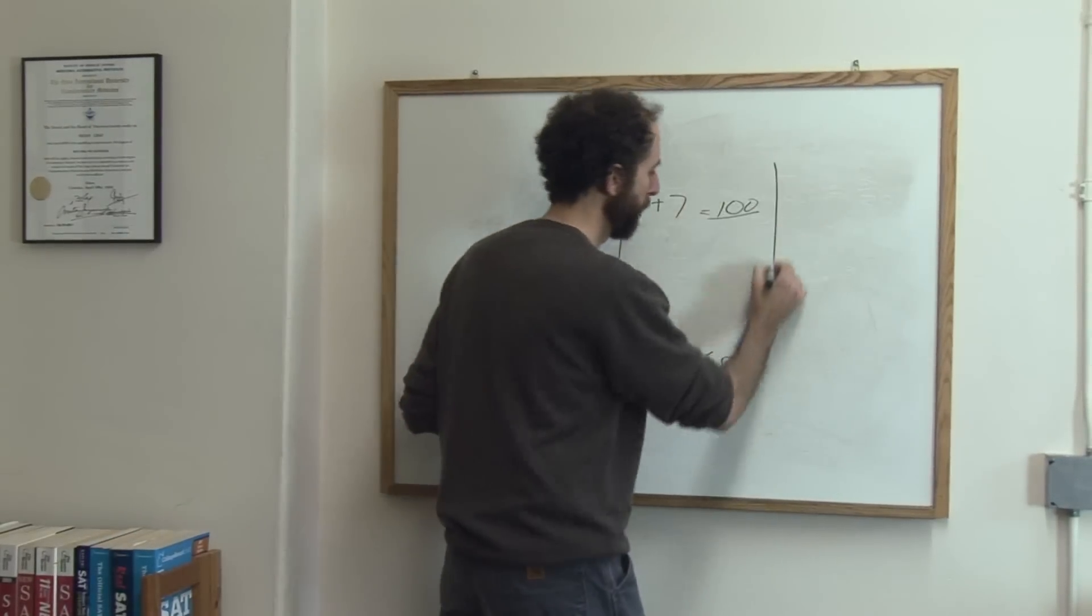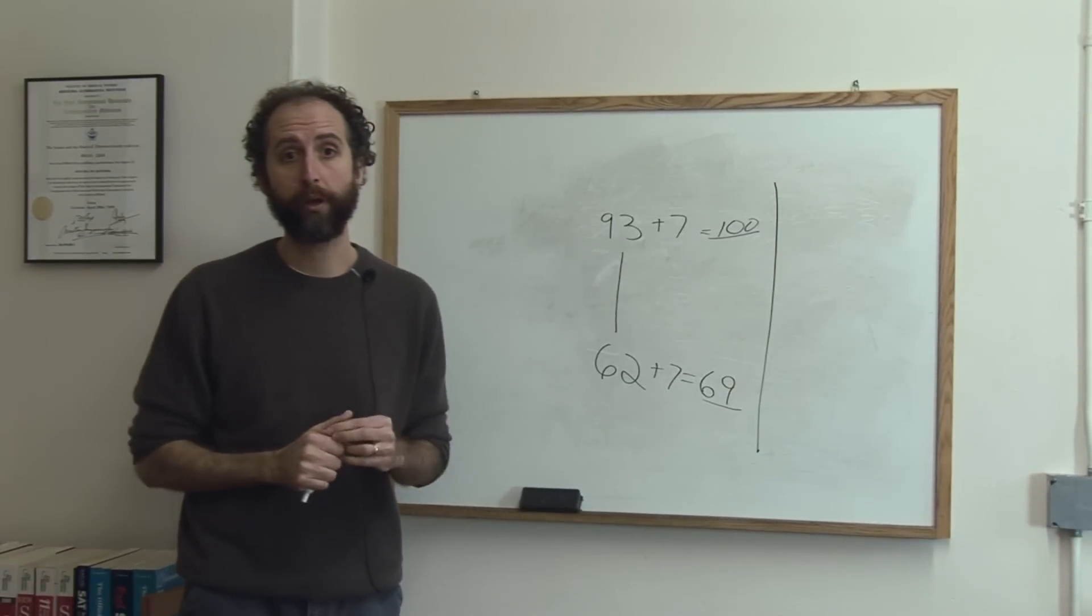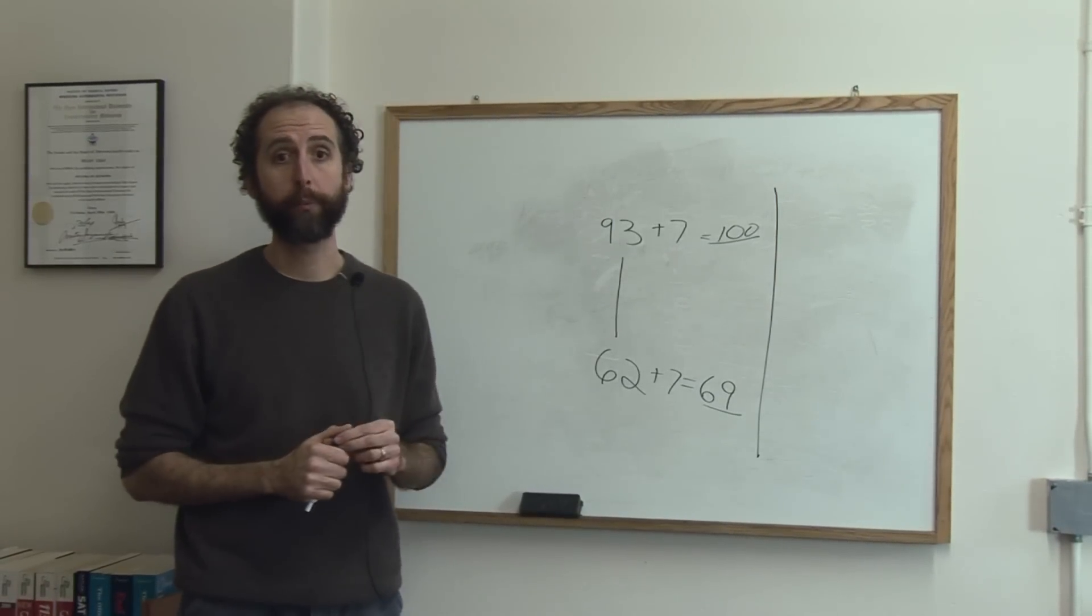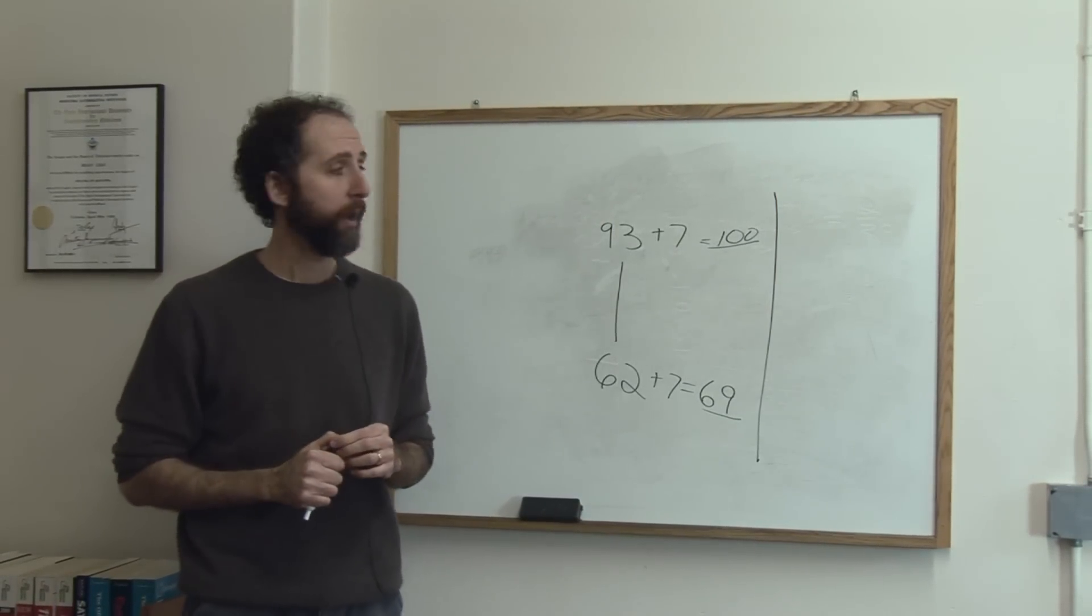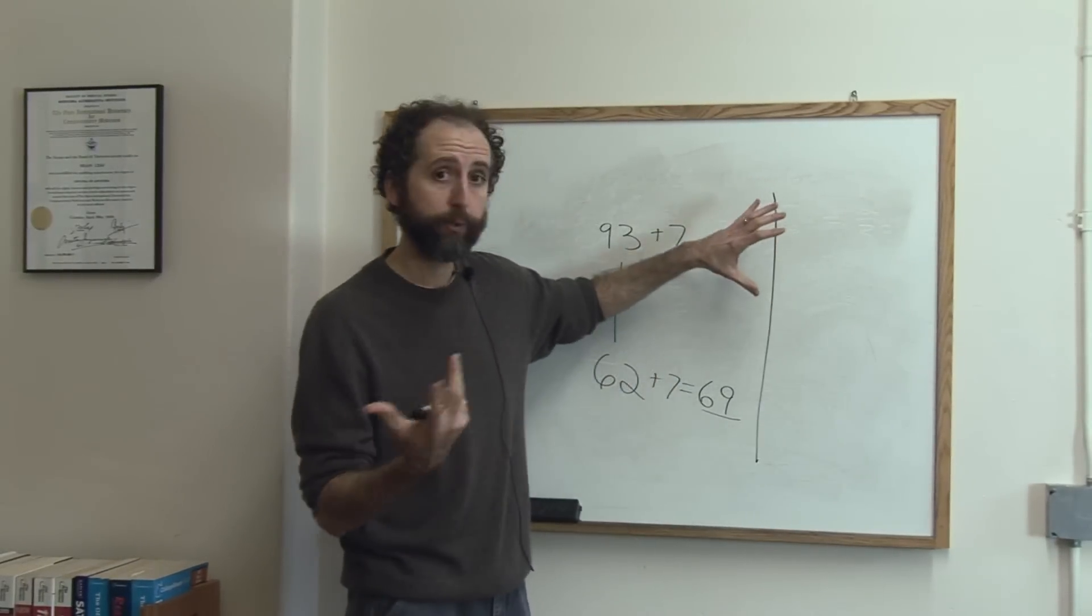The second way to grade on a curve is a frequency or distribution curve. A lot of times they base it on the bell curve, actually, but you can choose whatever you want. And what they'll do is sometimes even before the semester starts, the teacher will say...